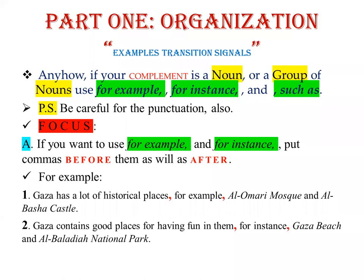Second example: 'Gaza contains good places for having fun, for instance, Gaza Beach and Al-Baladiyya National Park.' The transition signal is surrounded by two commas. We are putting nouns or a group of nouns — we do not put complete sentences here.